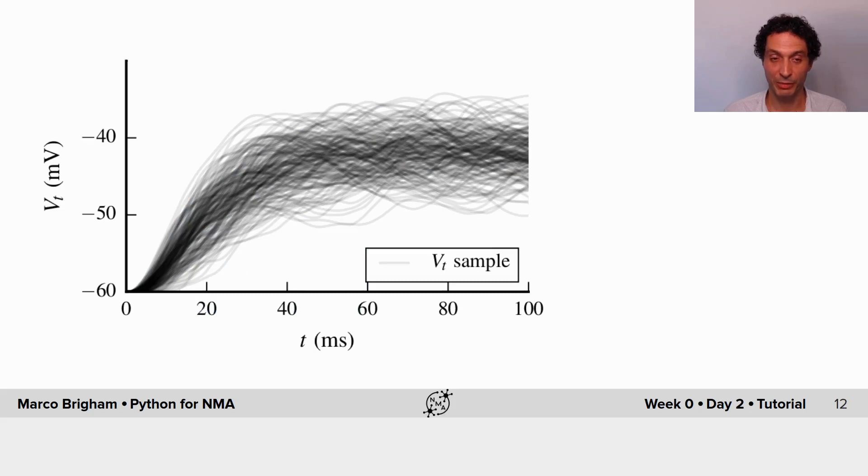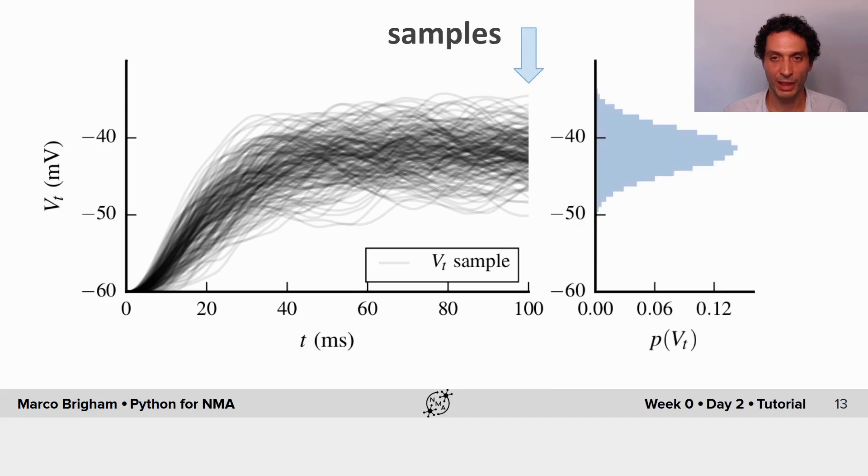So for example, when in the previous lecture, when we looked at ensemble statistics and we collected many realizations of our LIF neuron, we can for example take samples at a given time point, so here we're taking samples at 100 milliseconds, and we are plotting a histogram, so the distribution of the values in each one of these bins.